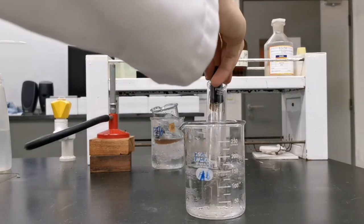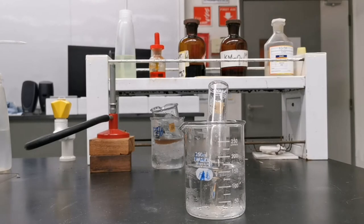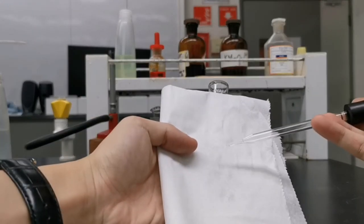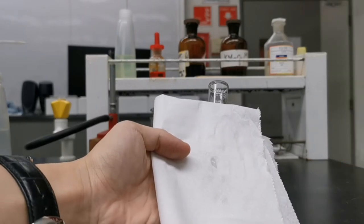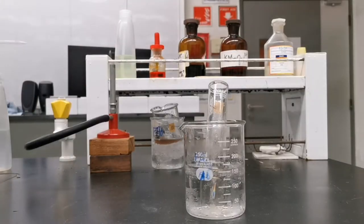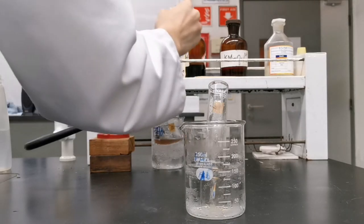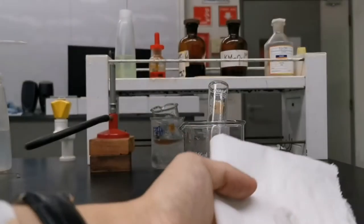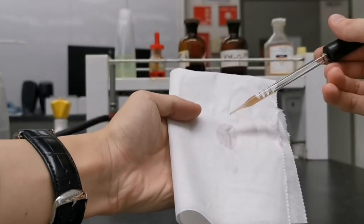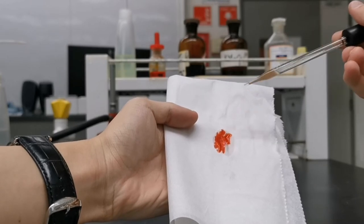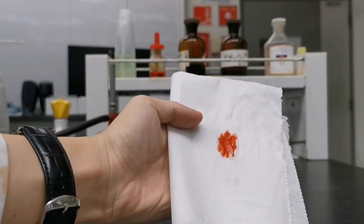To do this I use a tissue paper, add a drop of the diazonium ion solution onto it, and then proceed by adding a drop of naphthol onto it. A bright red color is seen which is very fascinating.